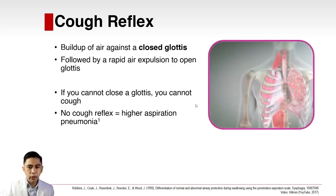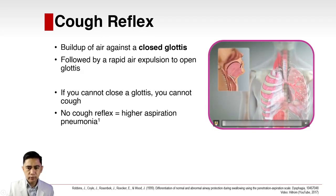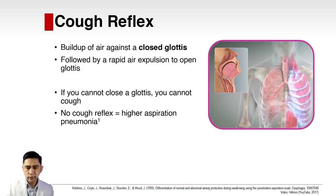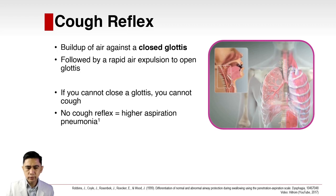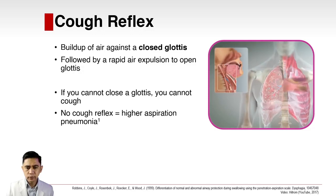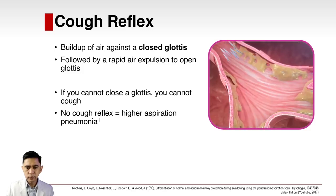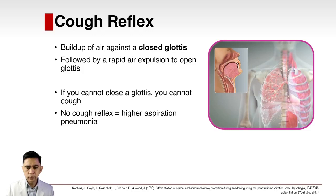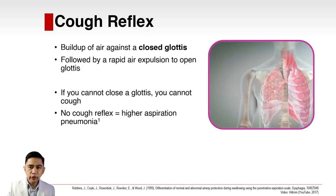A typical cough involves a deep inspiration, tight closure of the glottis, quick and forceful contraction of the expiratory muscles, and then sudden opening of the glottis while expiratory contraction continues. High intrapulmonary pressure is generated; once the glottis opens, a blast of air expels foreign particles or secretions. Cough can be impaired when the glottis fails to close tightly or when respiratory muscles are weak or paralyzed.